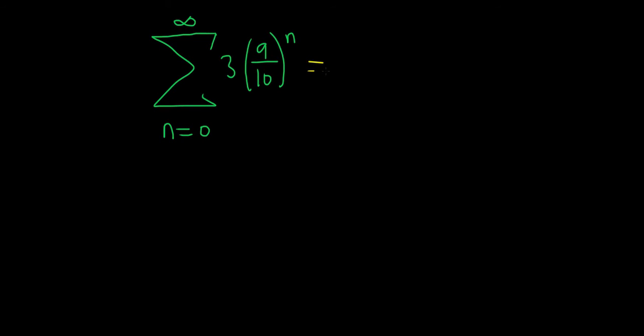all you do is you take this number and you plug it in. And that goes up top. So it's 3 and then 9 tenths to the 0. And on the bottom, you have to have 1 minus r.